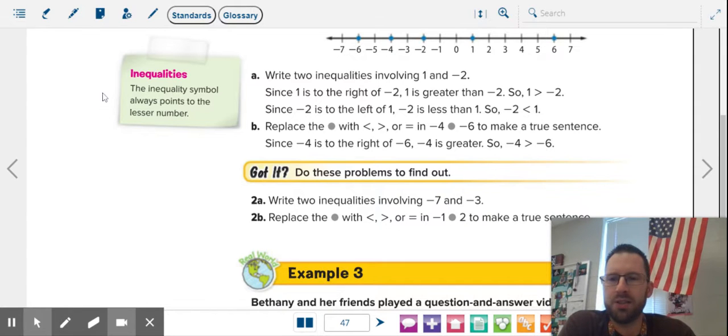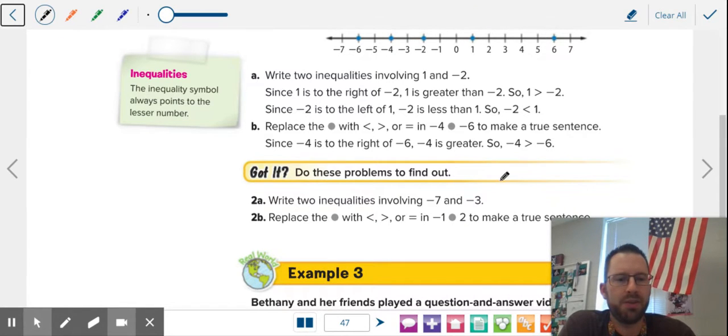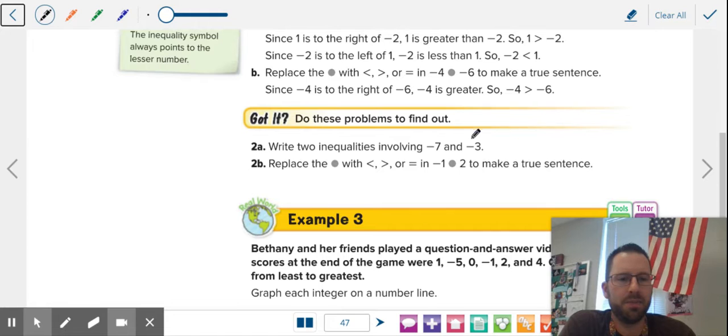Write two inequalities to compare these numbers. So we kind of just did it up there. So the way it's written right now, negative seven is less than negative three. Or you could reverse it. You could write the bigger number first is greater than negative seven.